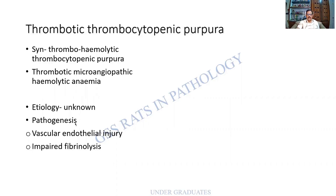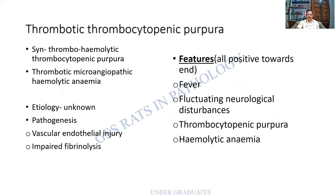The etiology of TTP is unknown. In the pathogenesis, there is vascular endothelial injury and impaired fibrinolysis, which can result in a clotting disorder. The clinical features can vary: fever, fluctuating neurological disturbances, thrombocytopenic purpura, and hemolytic anemia. Initially one or two may be positive, but eventually all four are seen, forming what is called a tetrad.